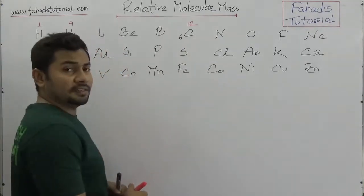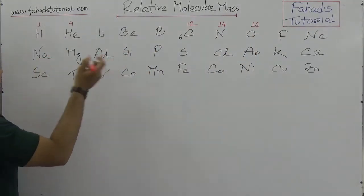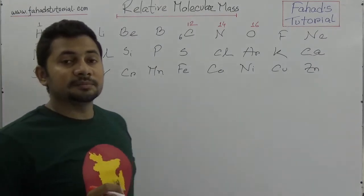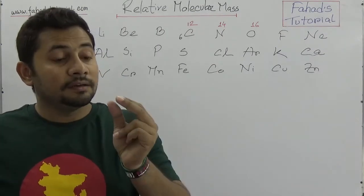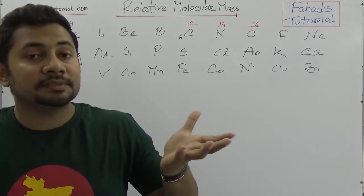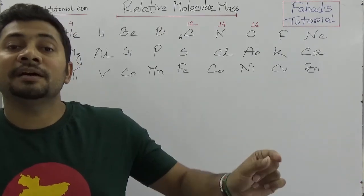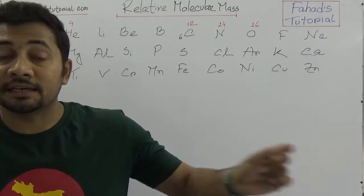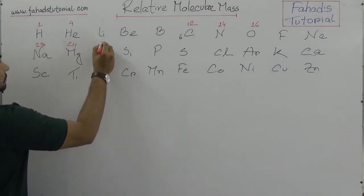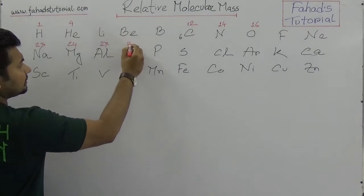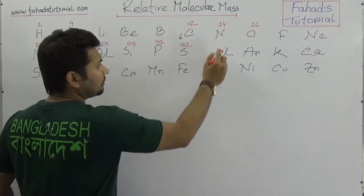Nitrogen's relative atomic mass is 14, oxygen is 16. Sodium is a very common element — its atomic number is 11 but its atomic mass is 23. This means one atom of sodium has a mass 23 times higher than 1/12th of the mass of the carbon-12 isotope. Magnesium is 24, aluminium is 27, and silicon is 28.